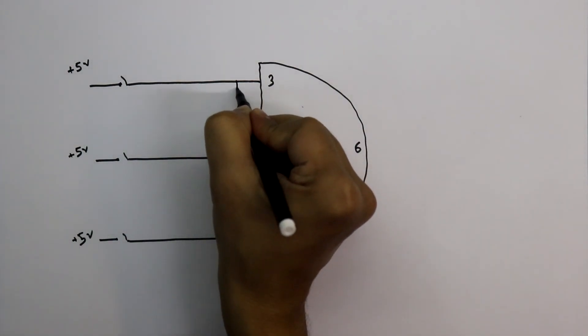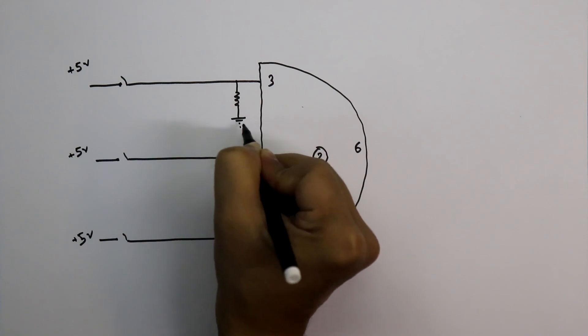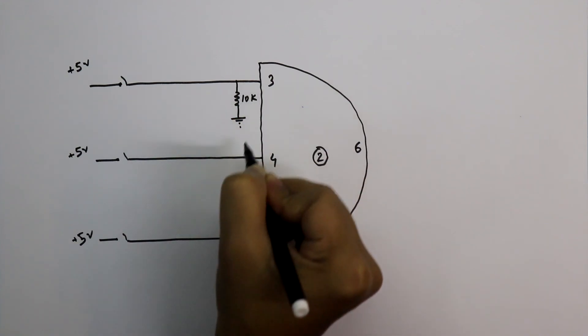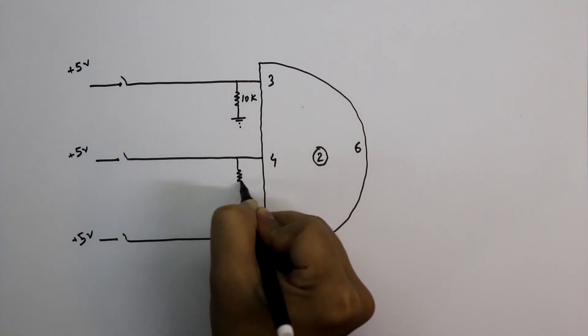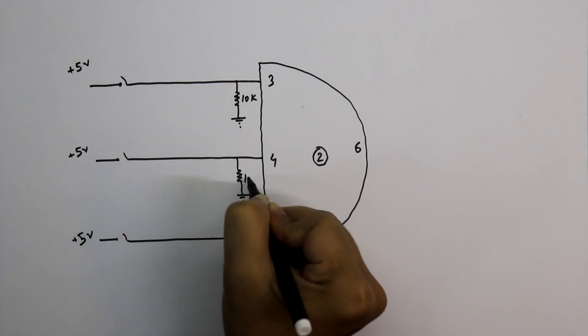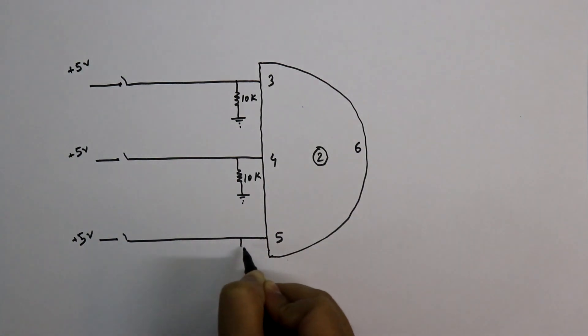As this one is a digital IC, so we have to connect pull-down resistors with input pins. I already explained why we should connect the pull-down resistor with digital IC, link is given in the description below. And the value of this resistor is 10 kilo ohms.